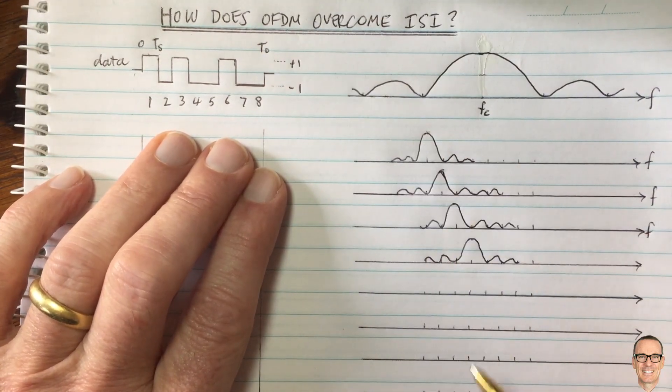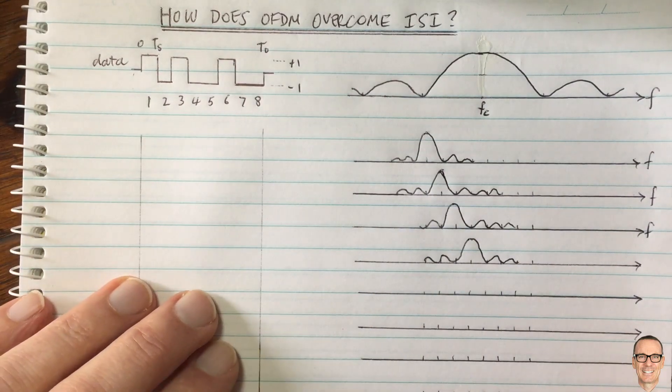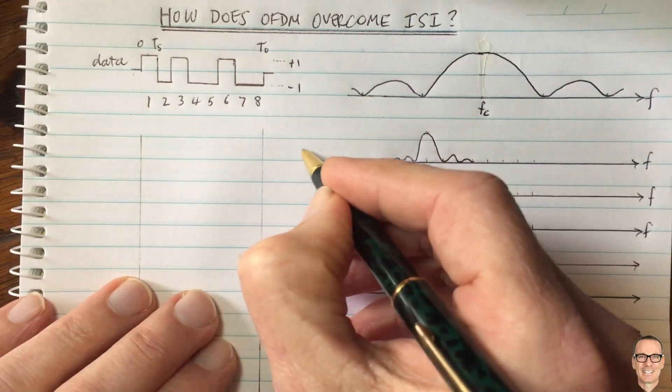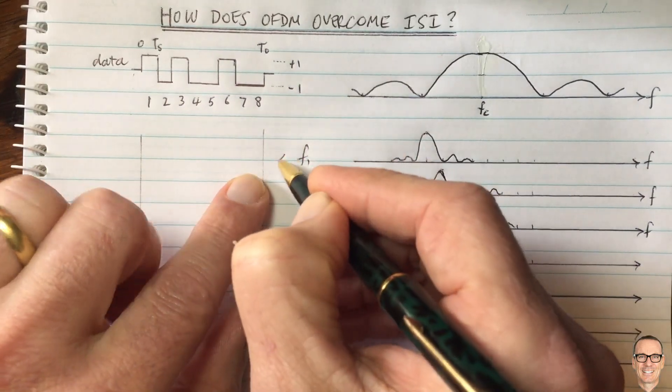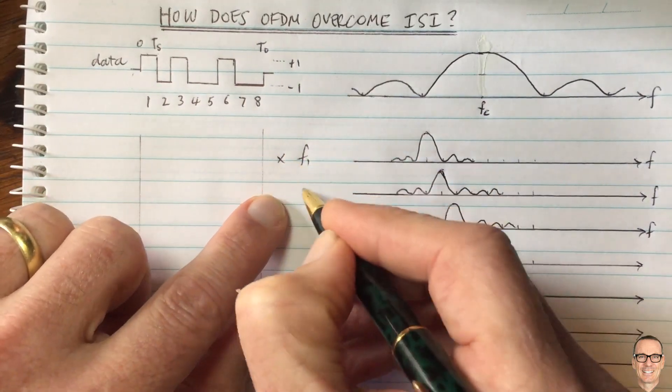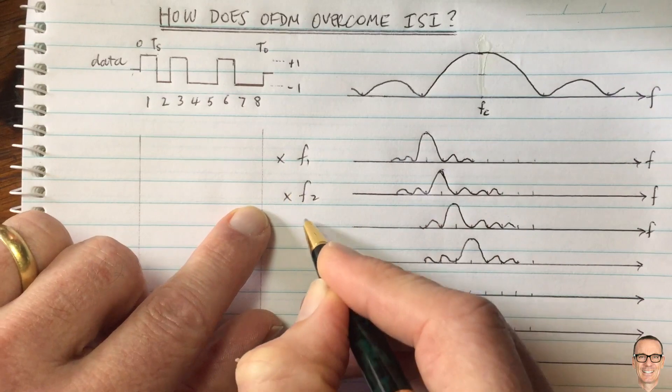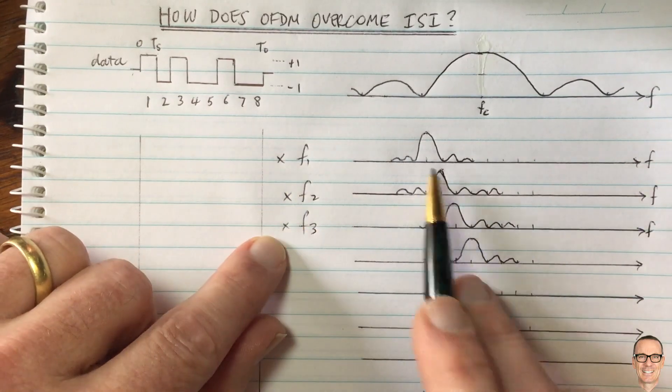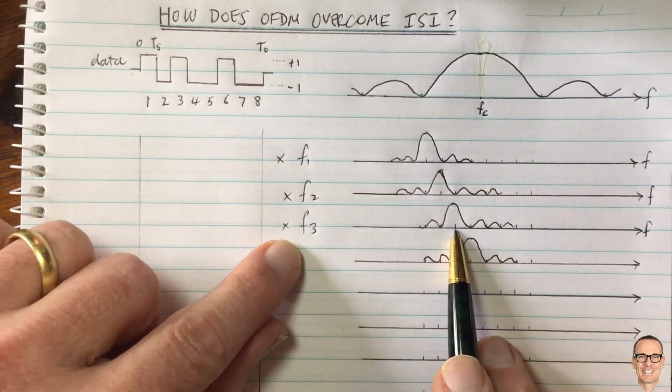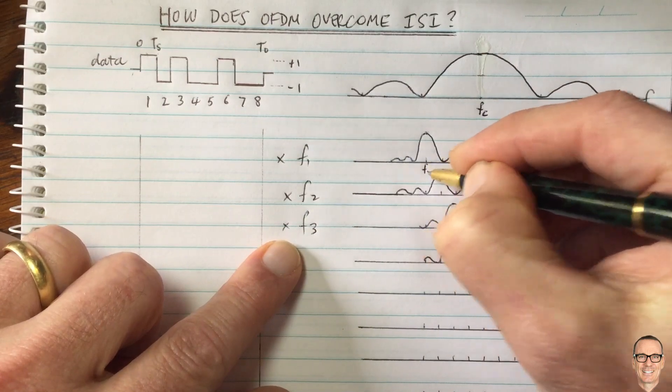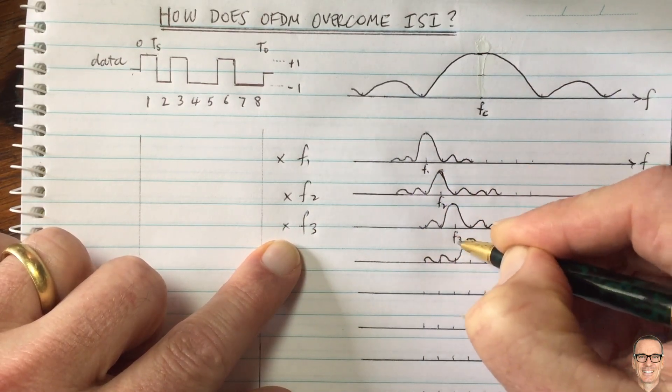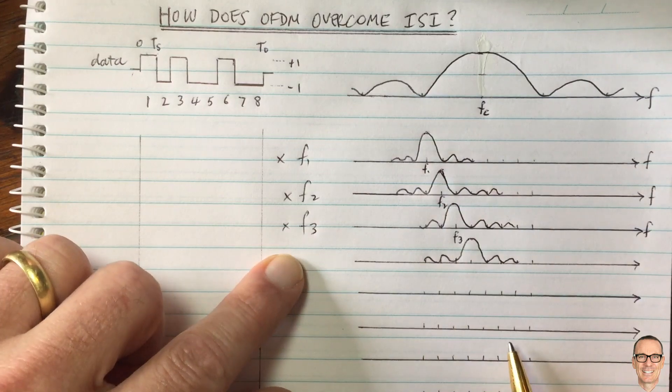Well, let's think backwards to what that means in the time domain. So this one is a sub carrier F1, and we're going to take a data sequence and multiply by F1, this one F2, this one F3. These are the different centers of these sub carriers here. So that's centered at F1, this one centered at F2, this one centered at F3, and so on.